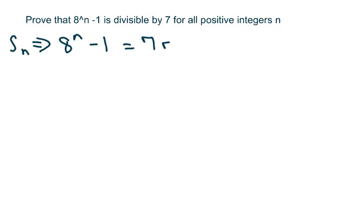I want to do condition 1 or step 1 and verify that my statement is true or valid for n equals 1. So I'm going to plug in 1 here and we get 7. 7 is divisible by 7, so this is true, it's valid for n equals 1. So there's a check on that.